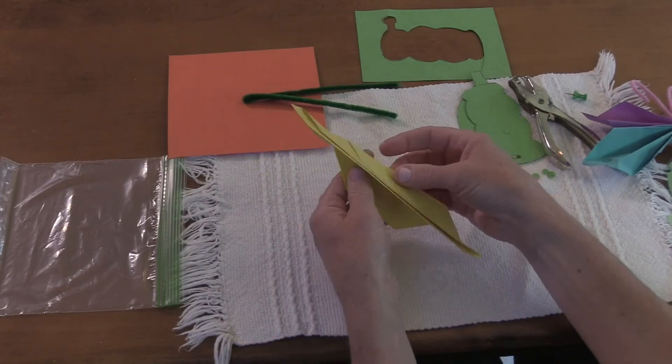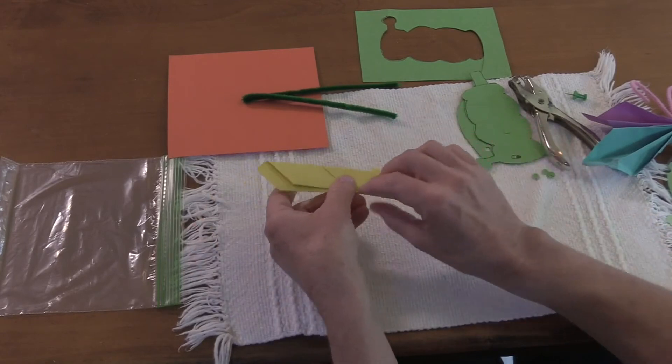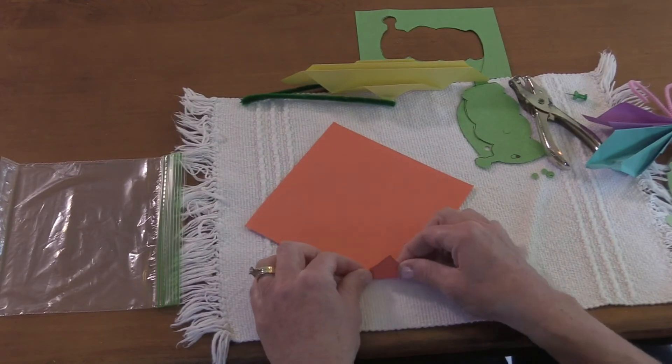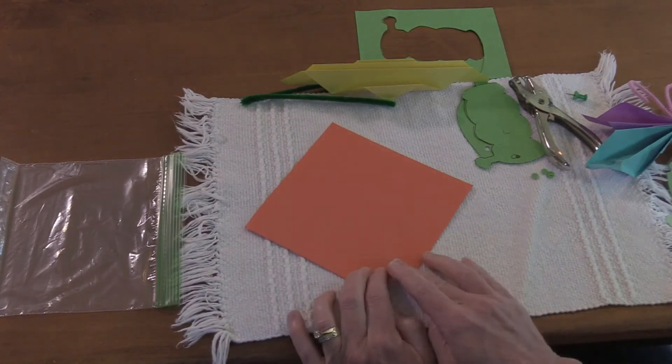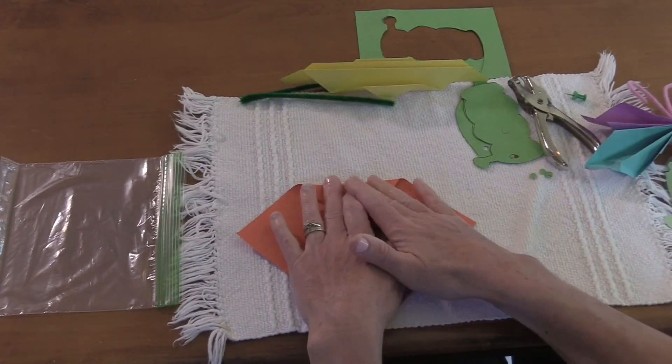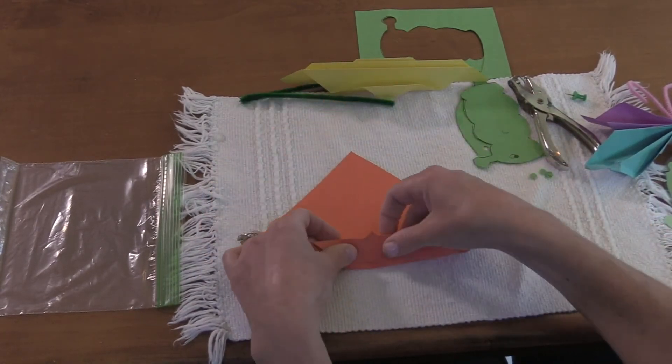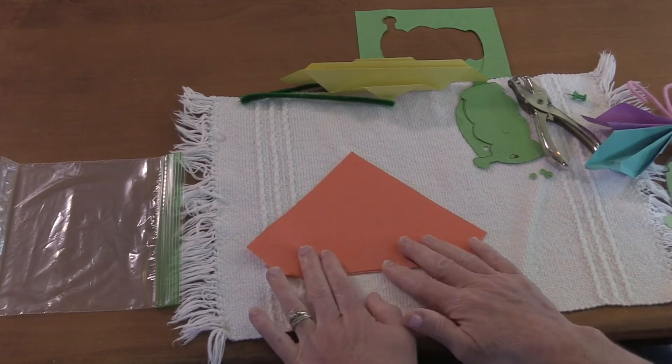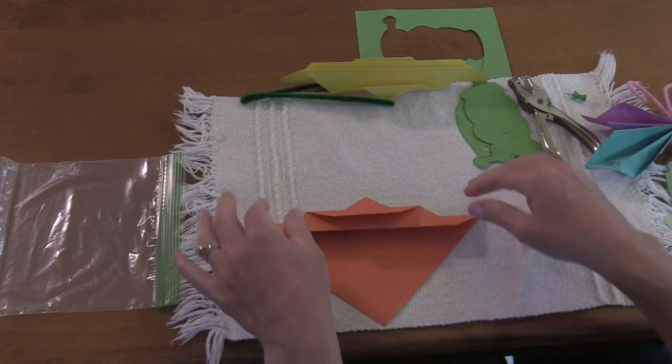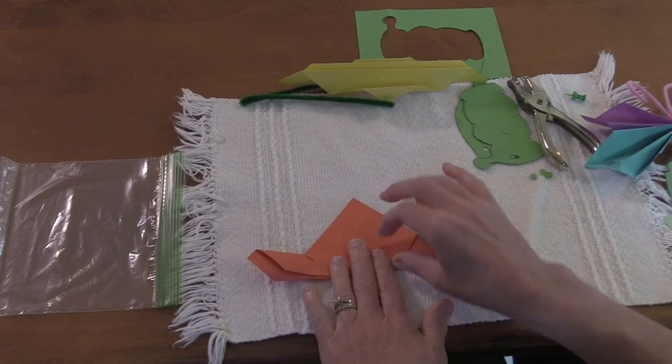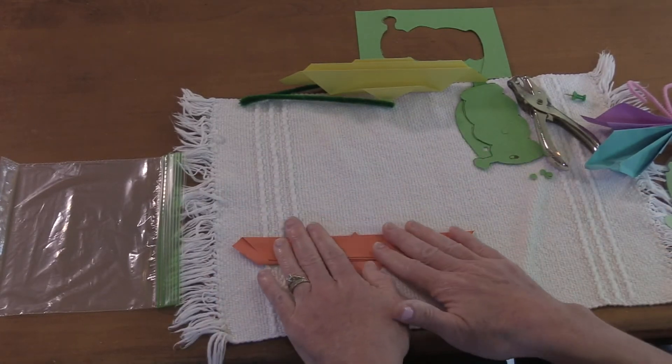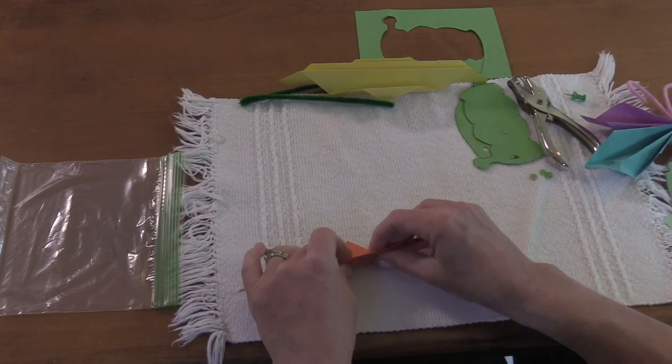Now I'll do the same with the orange paper. Watch carefully before you begin. Turn it over, press hard, and then one more time. Turn it over, press hard, and then one more time. Turn it over and press hard.